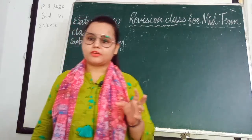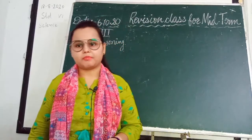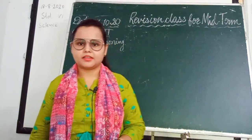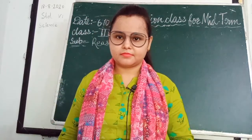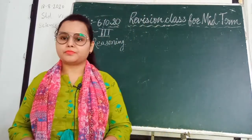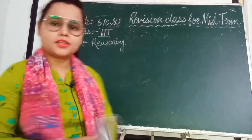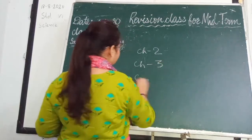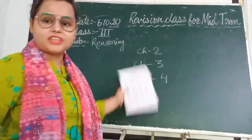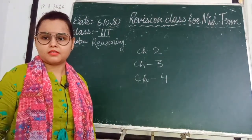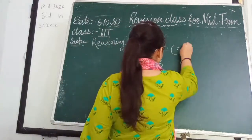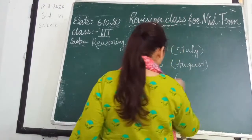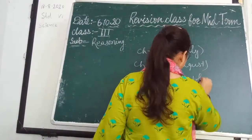And for that exam, this is your revision class today. So children, come live fast and open your reasoning book. In reasoning, chapter number 2, chapter number 3, and chapter number 4 — these three chapters. Chapter 2 was July month's course, chapter 3 was August month's course, and chapter 4 is October month's course. Got it, children?